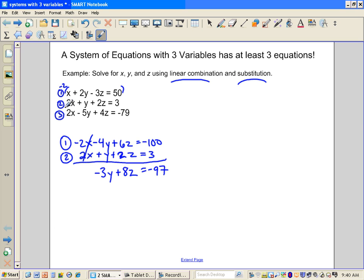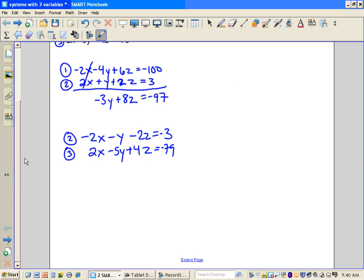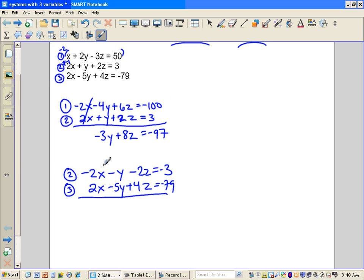I'm going to do a similar thing with equation two and equation three. I'm going to multiply equation two this time by negative 1. So I'm going to rewrite equation two and that's going to be negative 2x subtract y minus 2z is equal to negative 3. And equation three is just 2x minus 5y plus 4z is equal to negative 79. Eliminate the x's. Now I have negative 6y, 2z plus 4z is plus 2z is equal to negative 82.